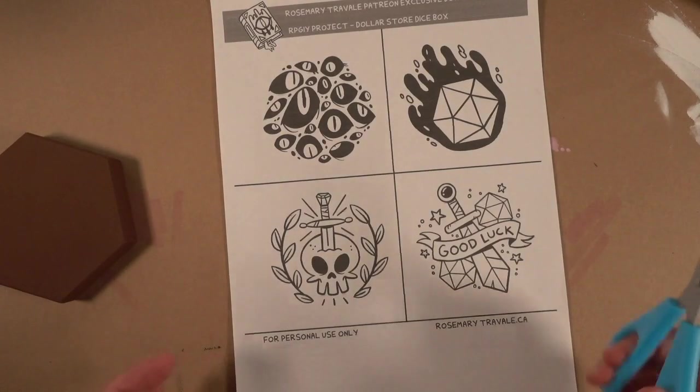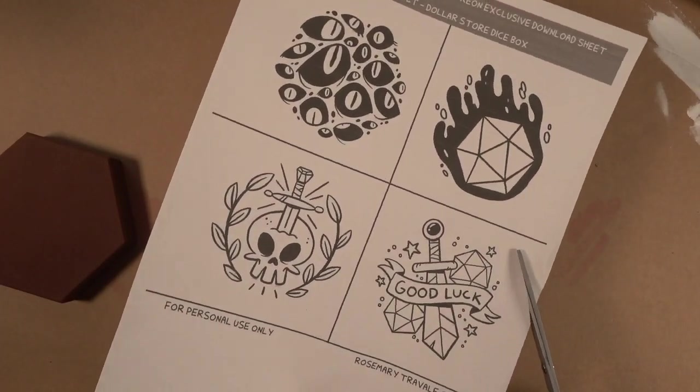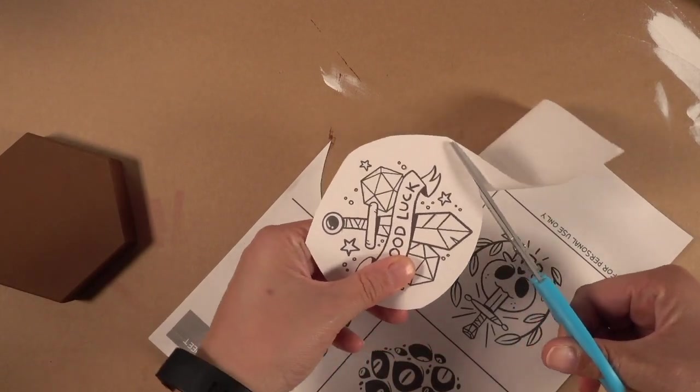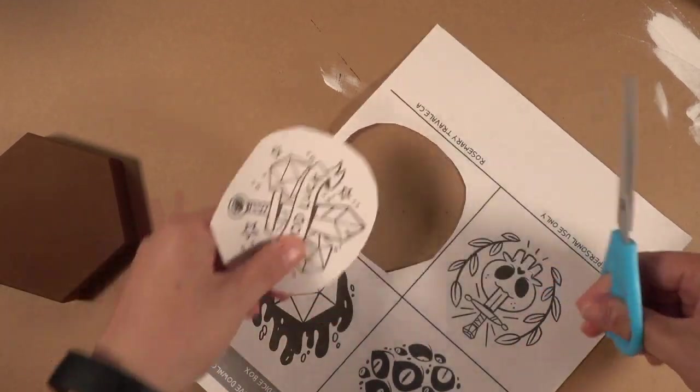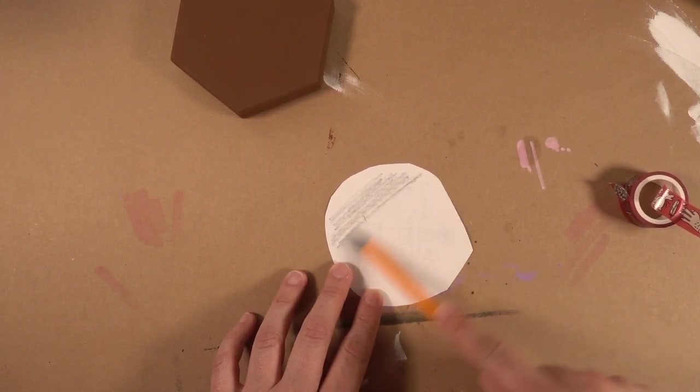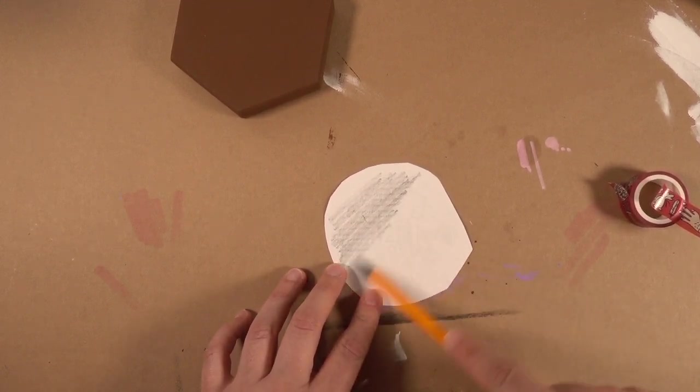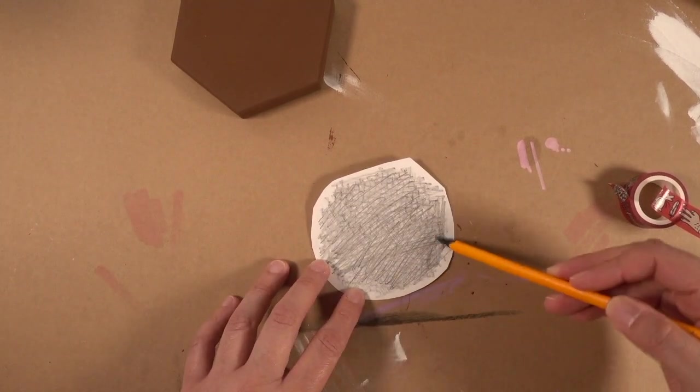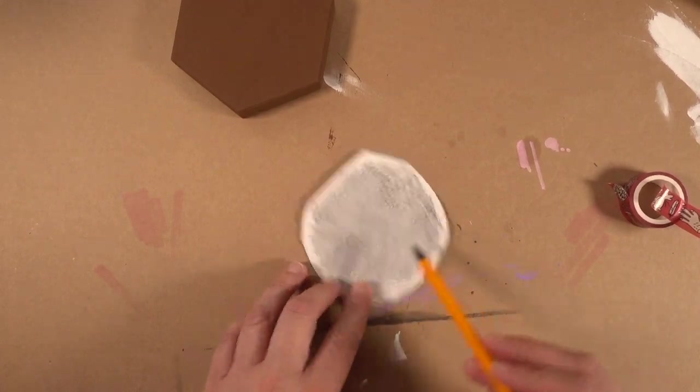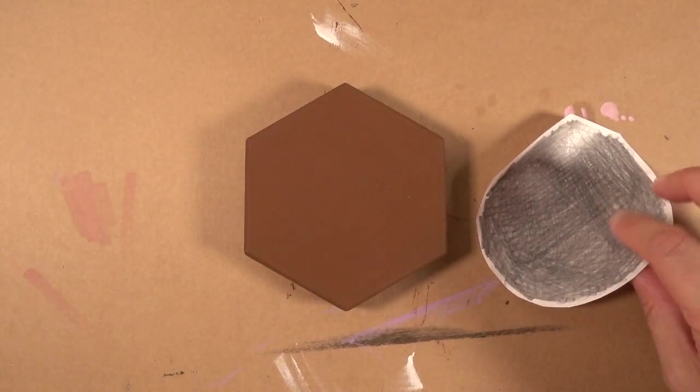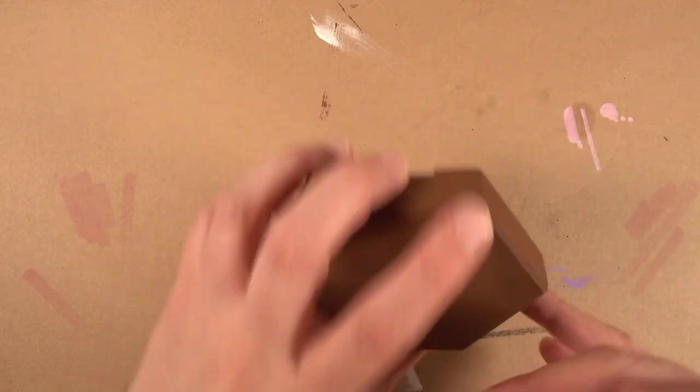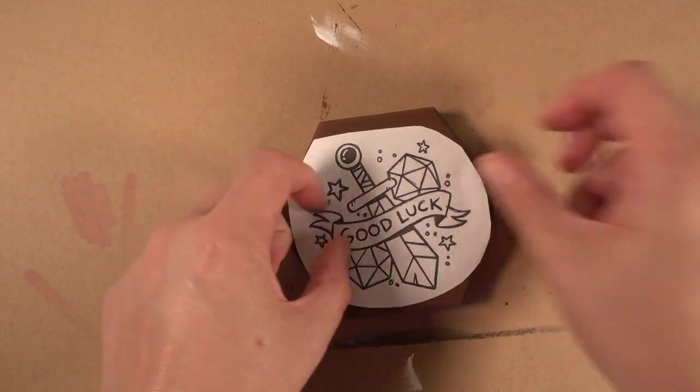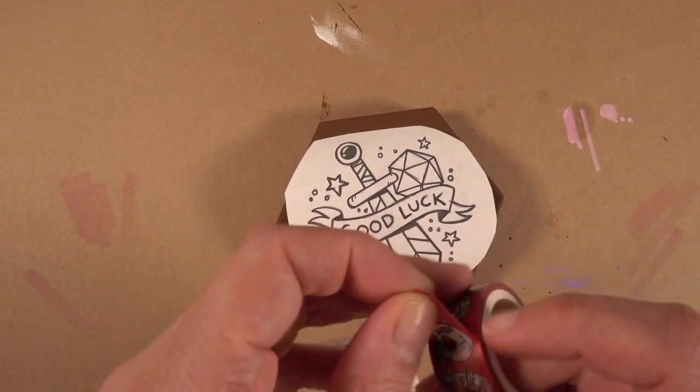The next step is to transfer the design onto the top of the box. For my printed out design sheet I picked the good luck one that I'm going to use for this box and then I cut it out to be roughly the same size as the top of the box. On the back of the paper you want to go back and forth with your pencil covering it with graphite, making it pretty dark because you're going to use this to transfer the design later. So when you're done doing that and it's pretty dark you want to tape the design to the top of your box, the design face up. Just make sure it's also facing the right way you want for it to be on the top of the box when you put the hinges back on.